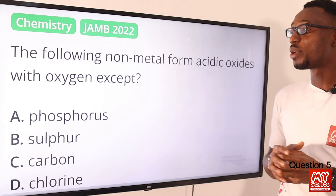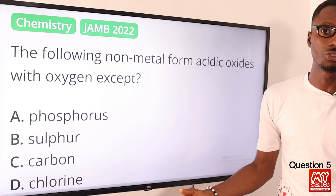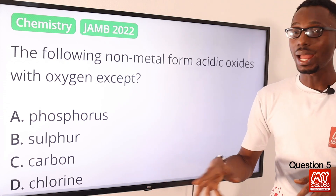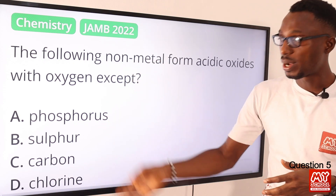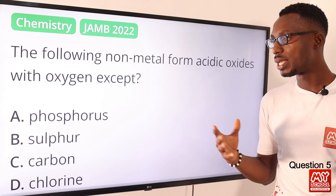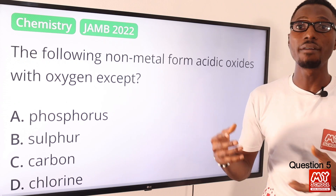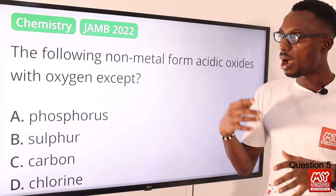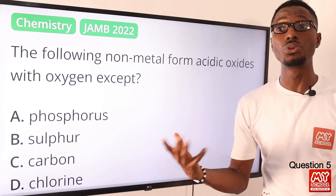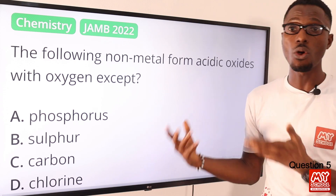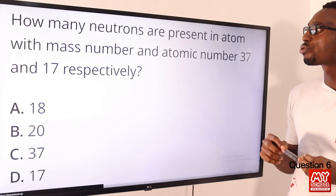Question five: the following non-metals form acidic oxides with oxygen except what? We are looking at reactions involving non-metals with oxygen — they should produce acidic oxides. However, the question asks which one has the ability to produce a non-acidic oxide. When it comes to carbon, we can have carbon dioxide which has acidic properties, but we also have carbon monoxide which is neutral in nature. So I pick C for carbon as the most viable option.